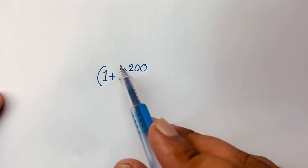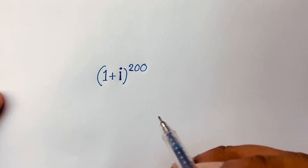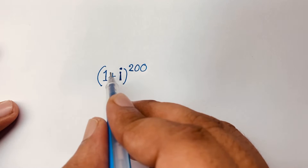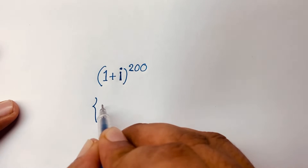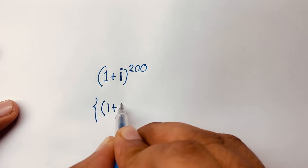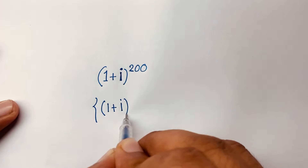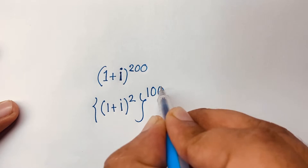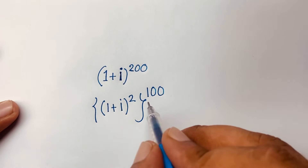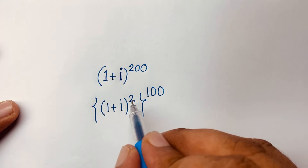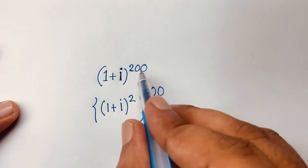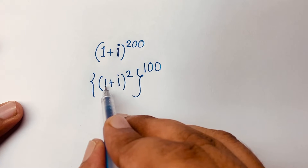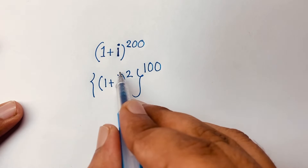(1 + i)^200 — first, I can rewrite this as [(1 + i)²]^100, because using the exponential rule, 2 times 100 equals 200.